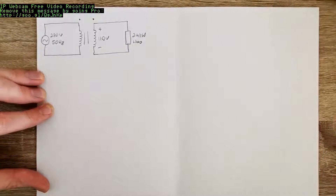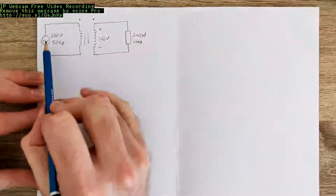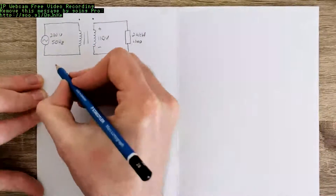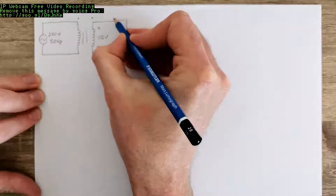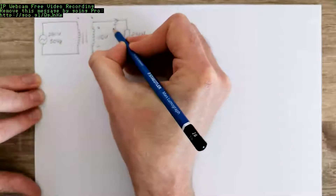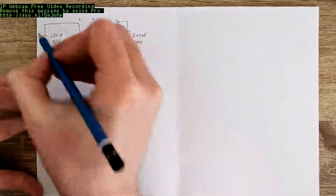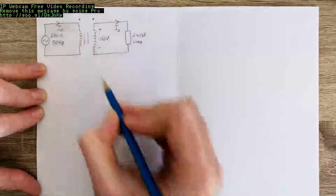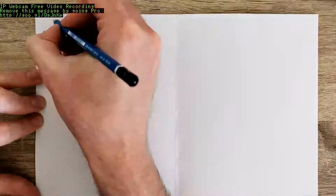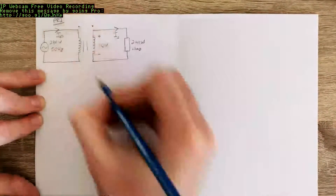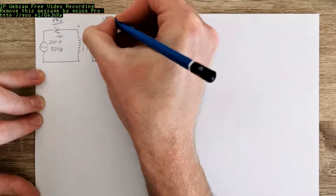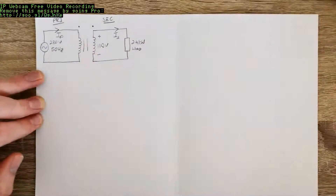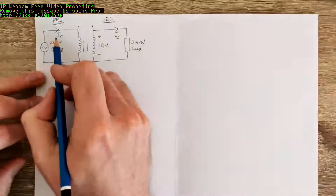The primary voltage is 230 volts, as shown here. This question is really testing your understanding of transformers. The current on the secondary side of our transformer flows this way, and correspondingly the current Ip on the primary side flows this way. This is our primary side of the transformer, and this is the secondary side. The first thing the question asks is how to calculate the primary current Ip.